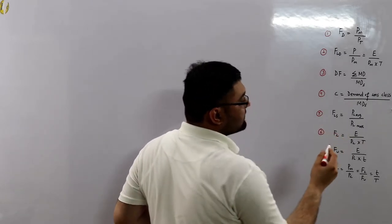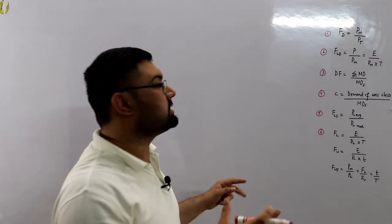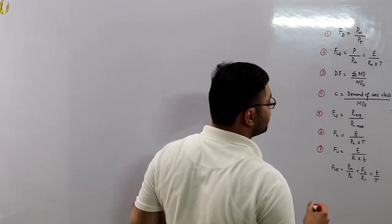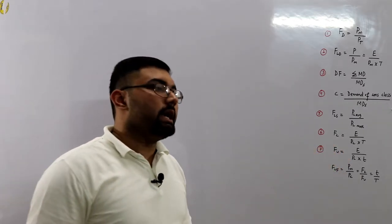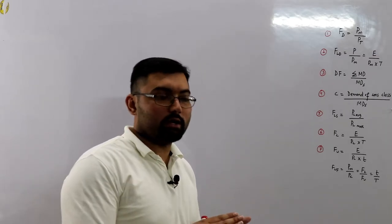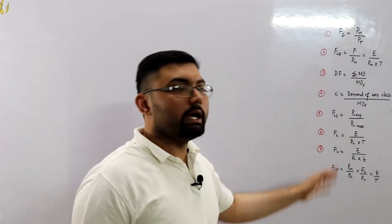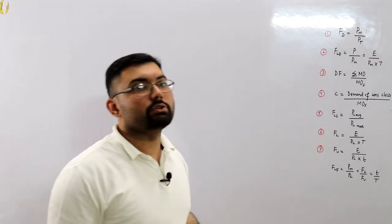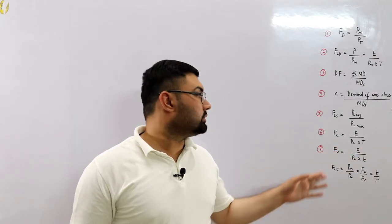Number six is the plant capacity factor — the energy units actually generated to the maximum energy units that could have been generated over a span of time. Number seven is the plant use factor — energy units generated divided by time, where that time is the time for which the plant is actually running, with shutdown and maintenance time removed. In the plant capacity factor, all those times are also included, as I have already explained. For instance, for a yearly capacity factor you include all hours in the year: 8,760.